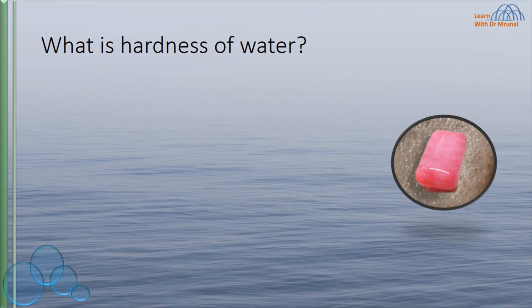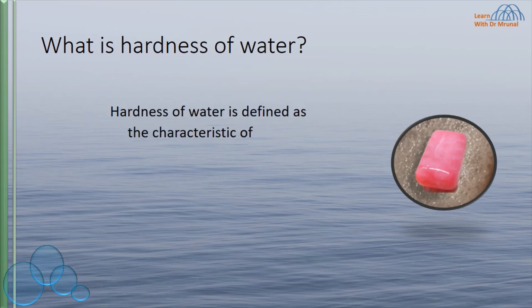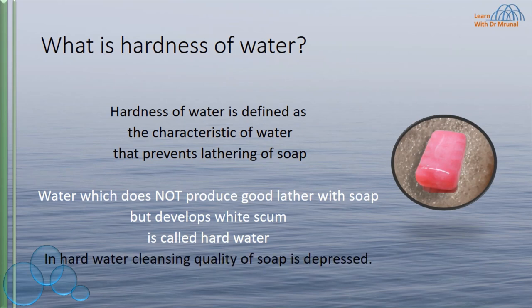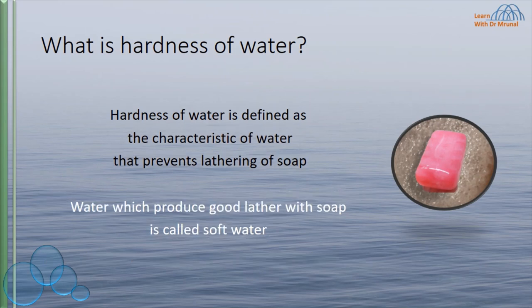What is hardness of water? Hardness of water is defined as the characteristic of water that prevents lathering of soap. Water which does not produce good lather with soap but develops white scum is called hard water. In hard water, the cleansing quality of soap is reduced. Water which produces good lather with soap is called soft water.